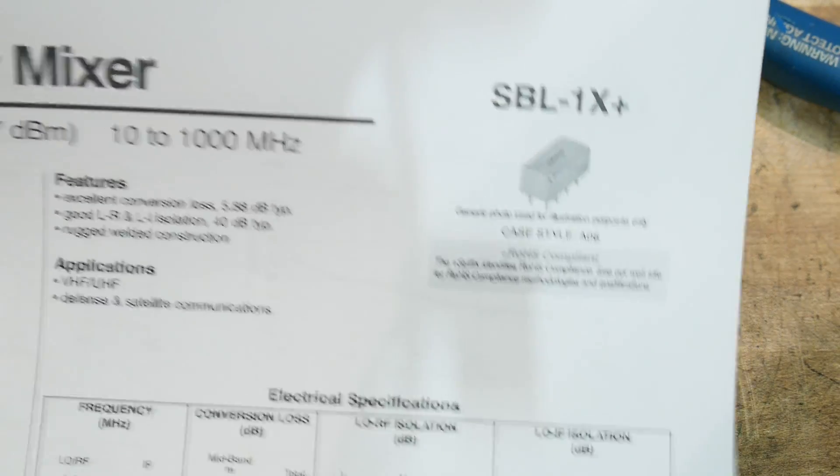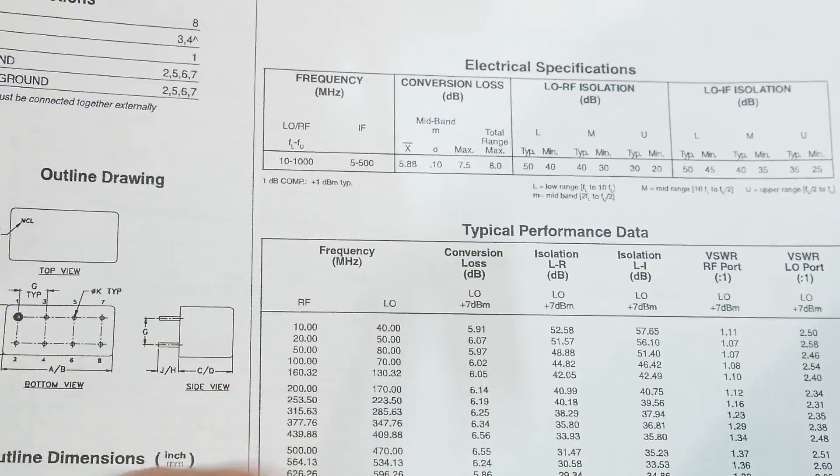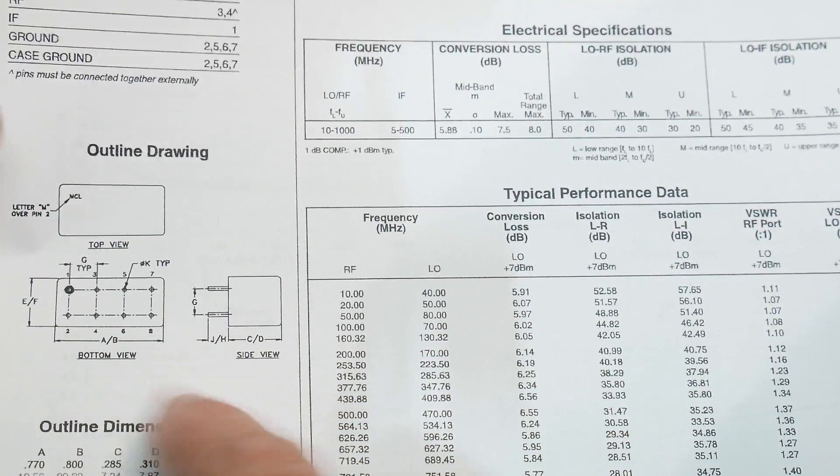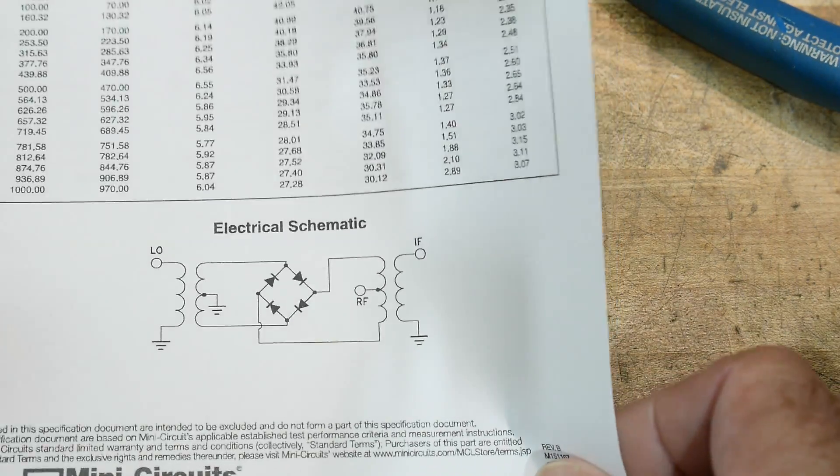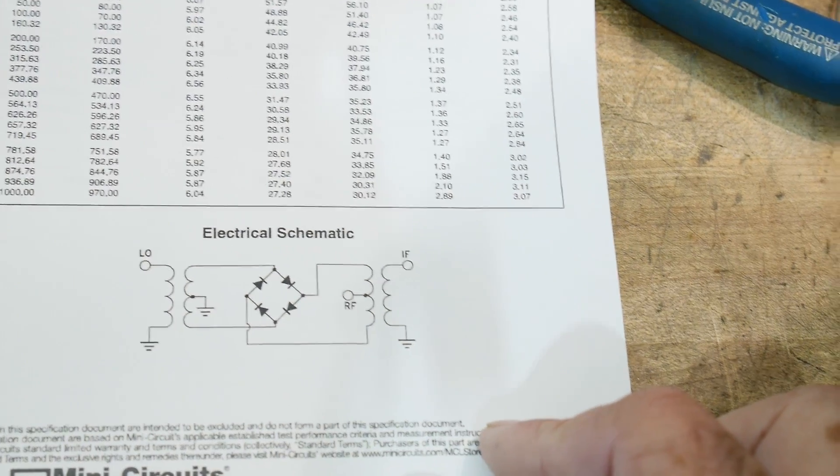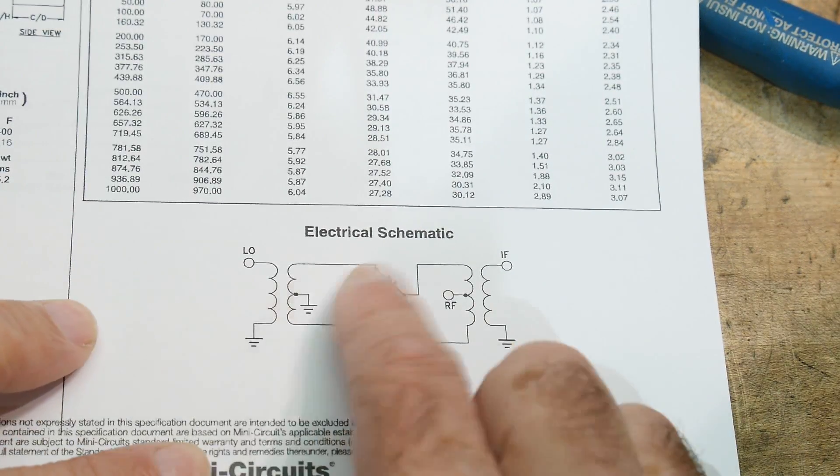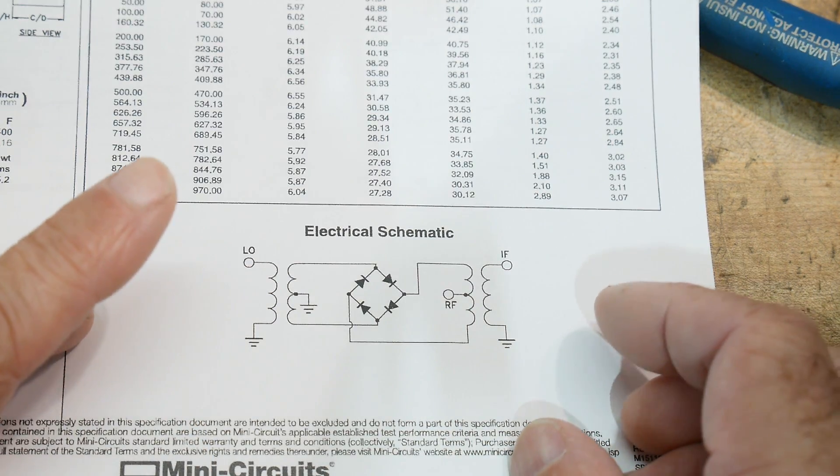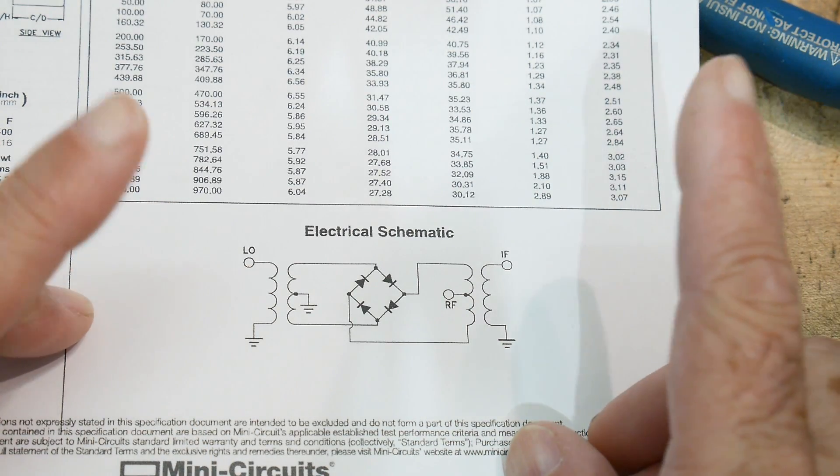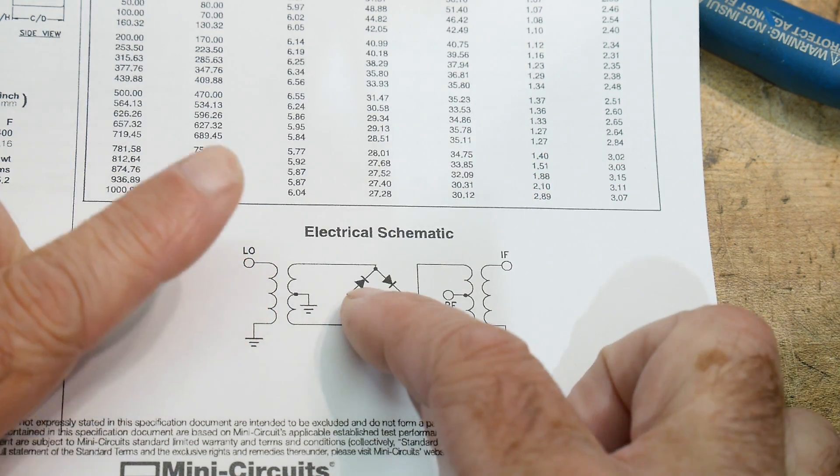There's a pinout here and there's a schematic diagram. So this is probably the most useful thing. This is the most useful thing. So this is called, I think I'm going to get this right, a double balanced diode modulator.